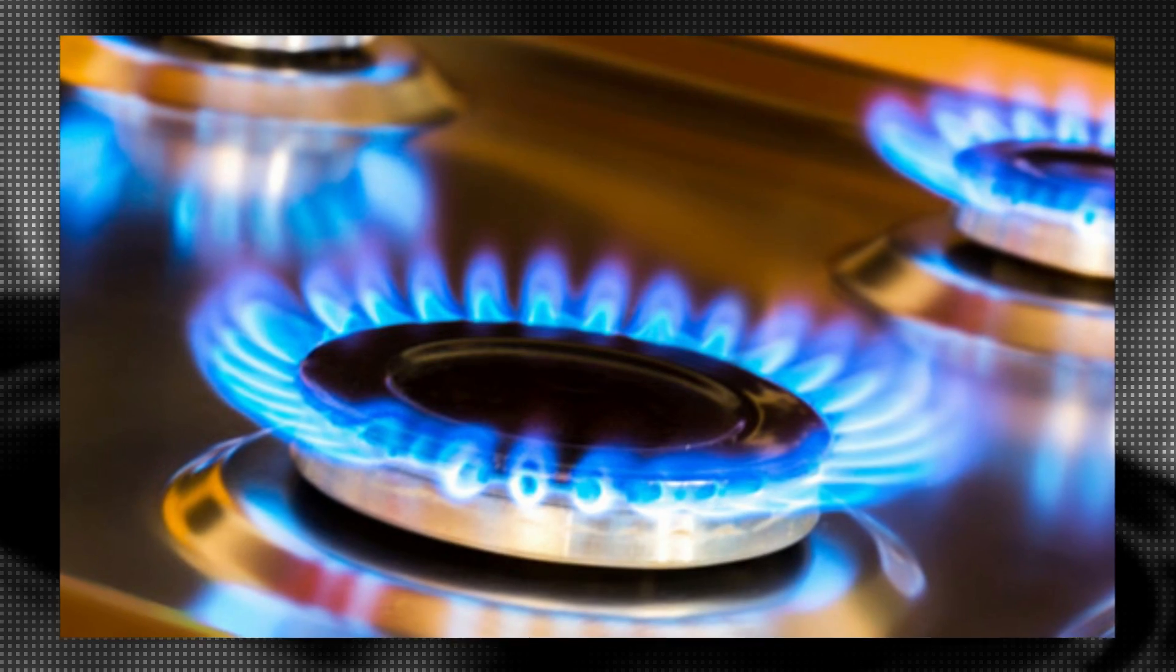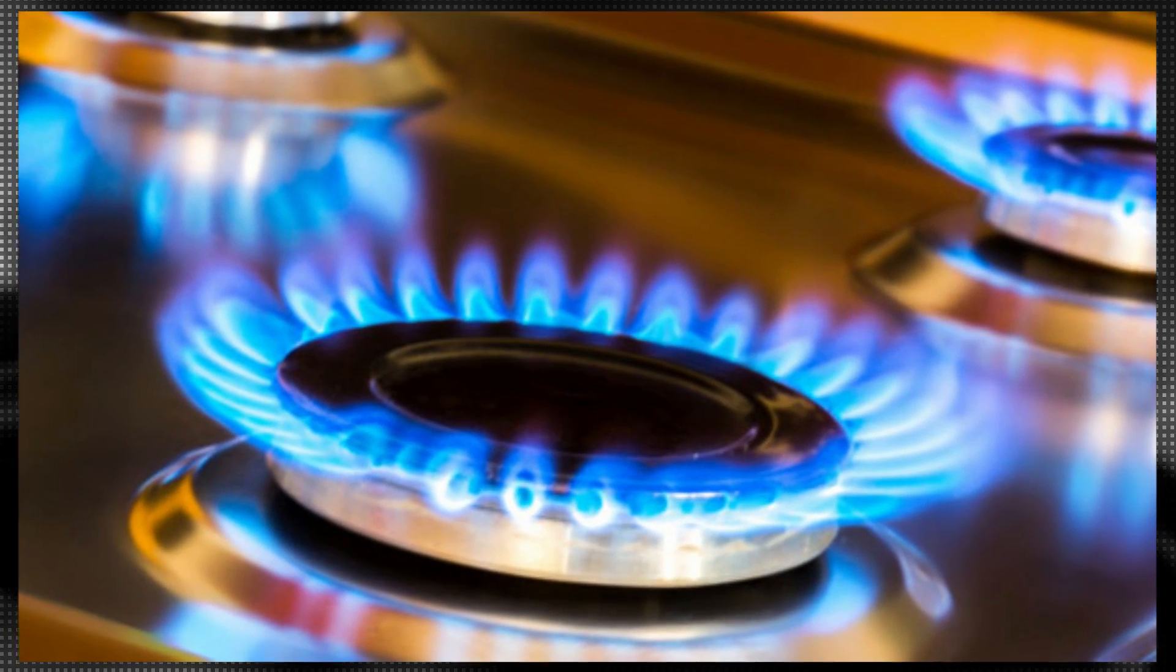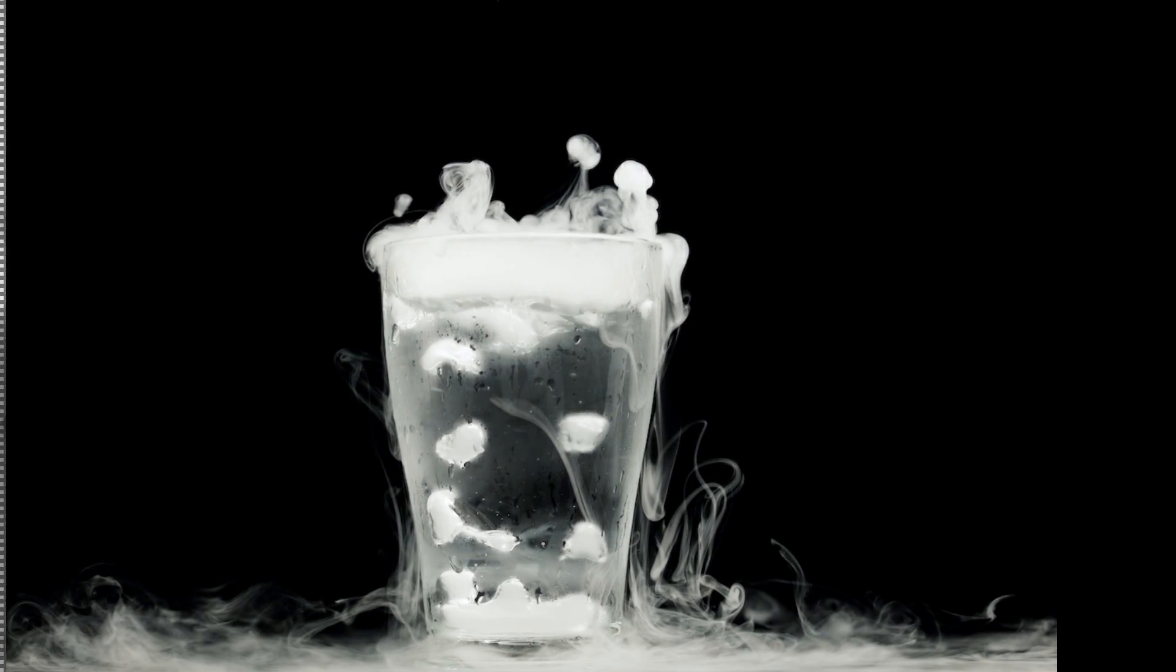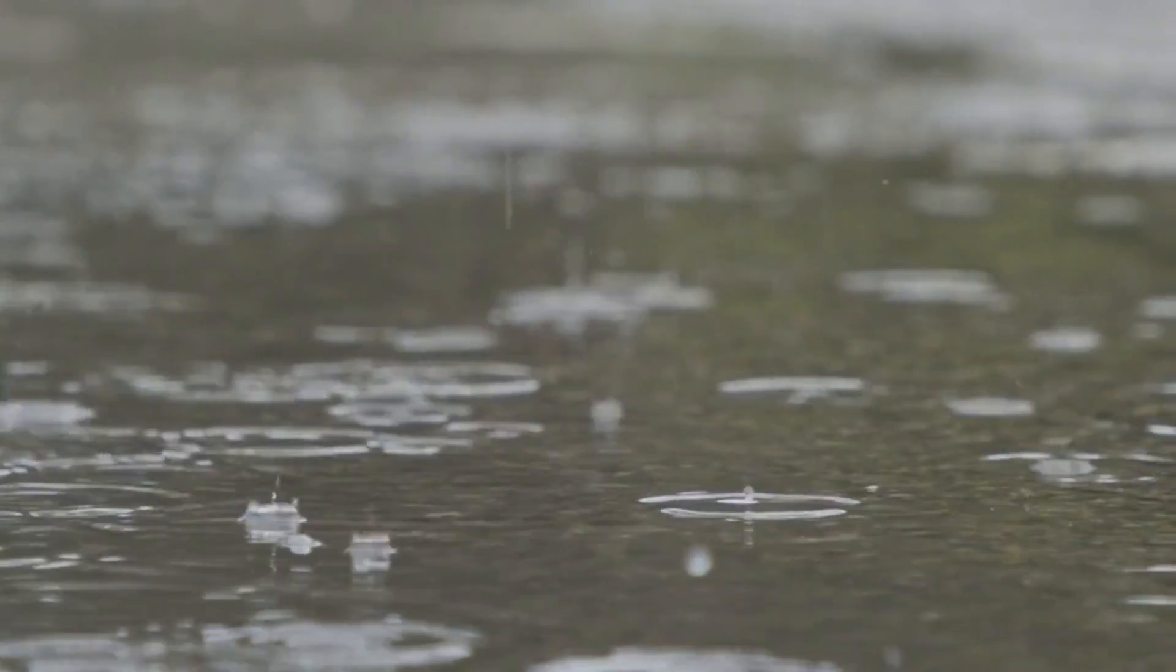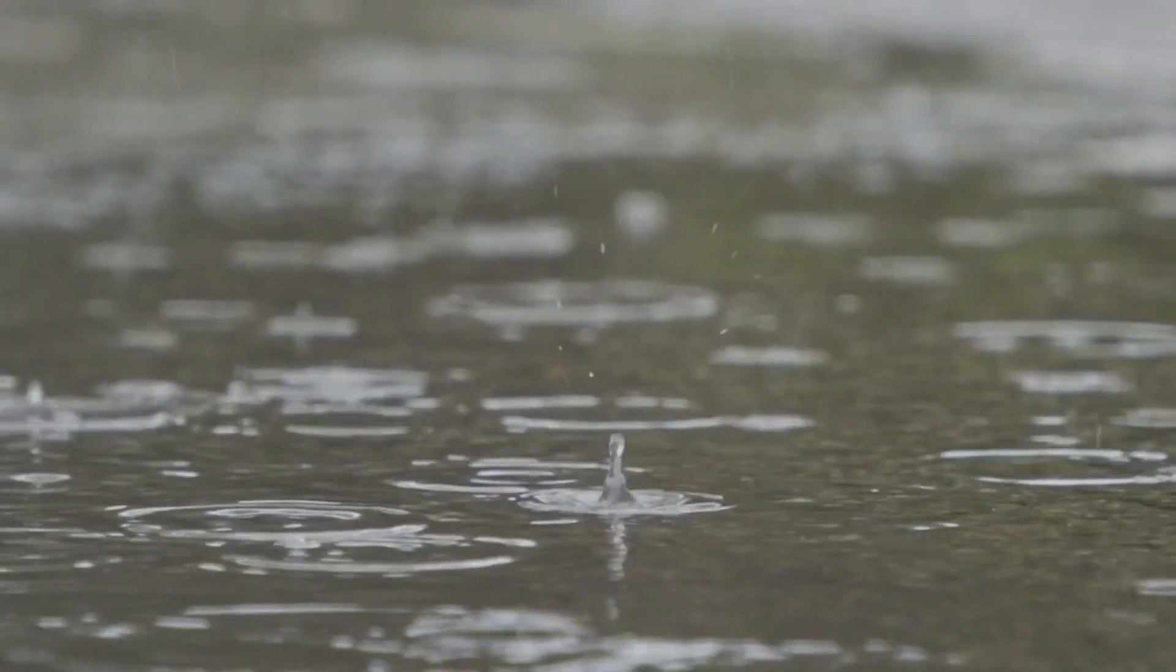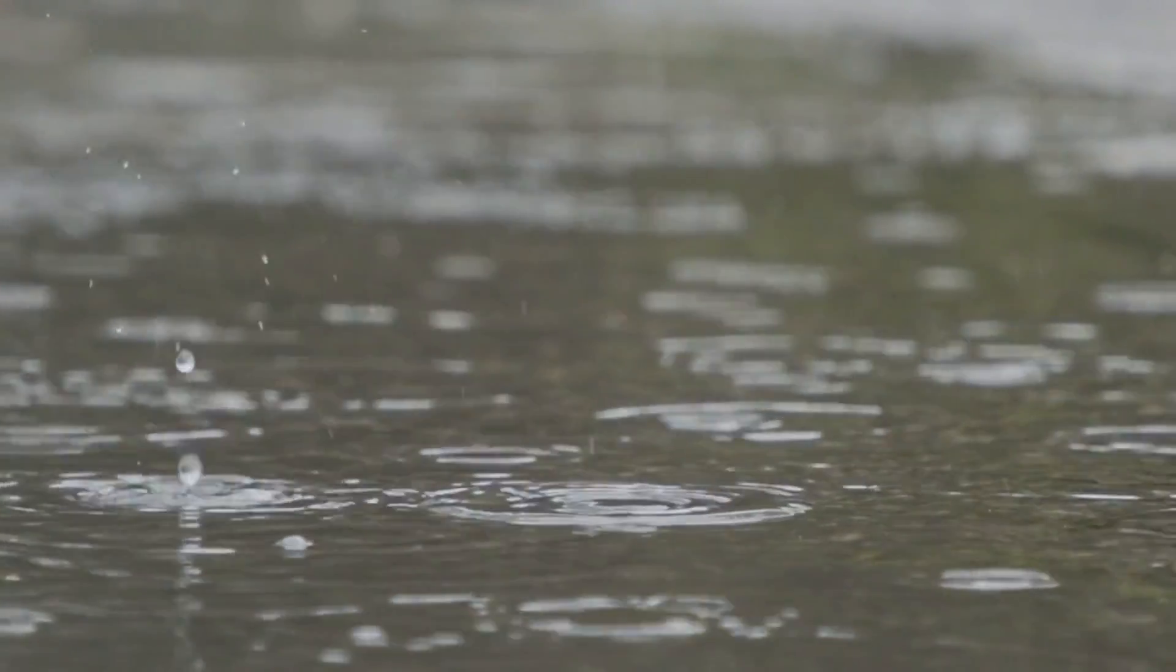Anyone who has used a gas stove knows that the gas we use to cook with is methane. Imagine a place where this gas has turned into a liquid, where it falls from the sky as rain, fills methane rivers and flows into massive methane seas.